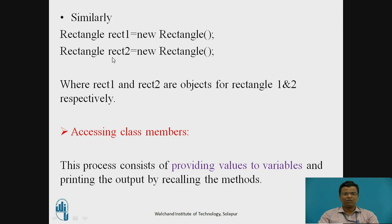Similarly for rectangle two: Rectangle rect2 = new Rectangle, where rect1 and rect2 are the object names for rectangle one and rectangle two.